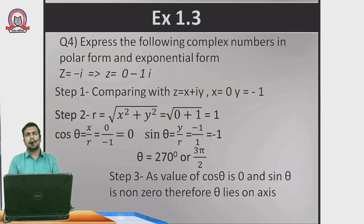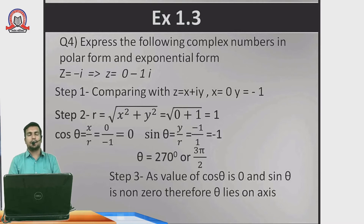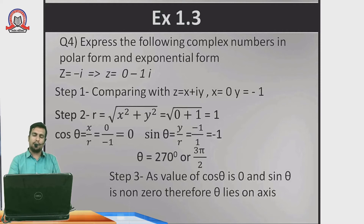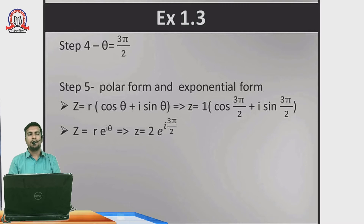Now, cosθ = 0 means the point does not lie on a horizontal axis direction — recall that cos relates to horizontal (0° or 180°) and sin relates to vertical (90° or 270°). Since cosθ = 0 and sinθ = −1 (negative), the point lies on the negative y-axis, which corresponds to 270°. So θ = 270° = 3π/2. The point is not in any quadrant; it is on the axis at 3π/2.